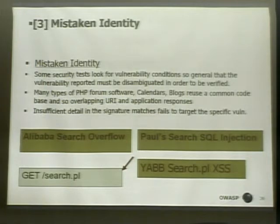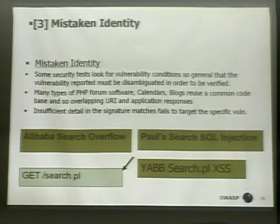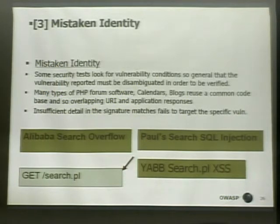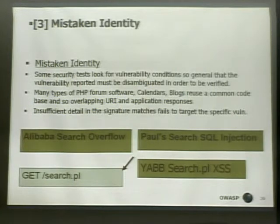The mistake in identity is that files or pages are called the same name — there are many different index.phps, search.pls, and so on. A lot of the signature bases in scanners are looking for known vulnerabilities in a known product on a known page, but there are going to be collisions with other products and custom-built apps. The scanner thinks it's found something because of a similarly named page, but they haven't checksummed the page. So a lot of the vulnerabilities flagged are just obscure vulnerabilities in a product where the signature detects on that page name, when what you're testing may have nothing to do with the actual vulnerability.